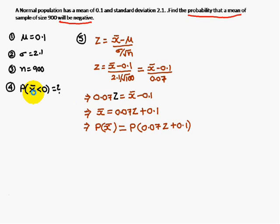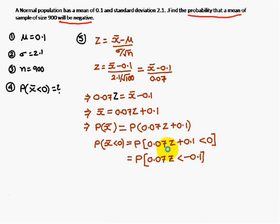So probability of x̄ less than 0, both sides you apply the probability. On the left hand side and right hand side you apply less than 0. Therefore probability of 0.07 times z less than, when you move the 0.1 to the right hand side, you get minus 0.1.